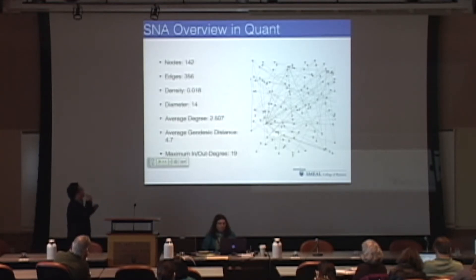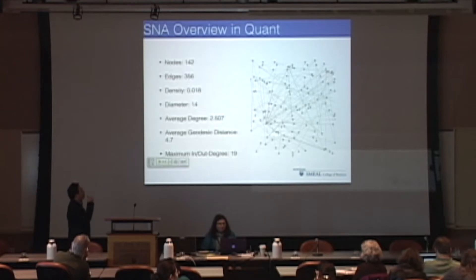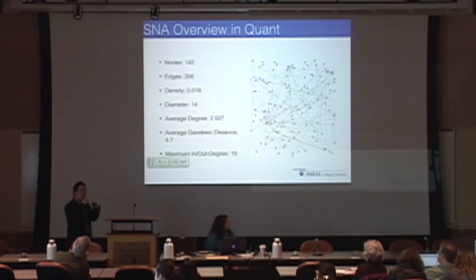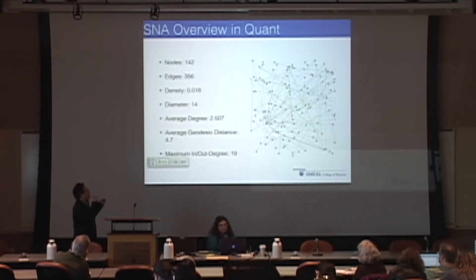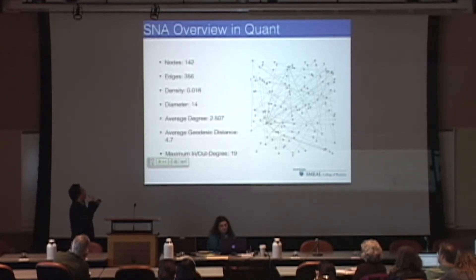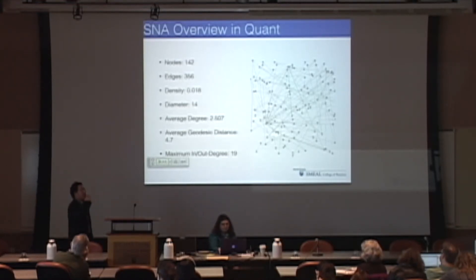Density is about how dense or how close among these people. You can see it's not so dense - people here are not so close to each other - but based on over six social network analyses I have done, I'll tell you this number is good for online discussion already. Since we don't have enough time, I'll go to the more important indexes.